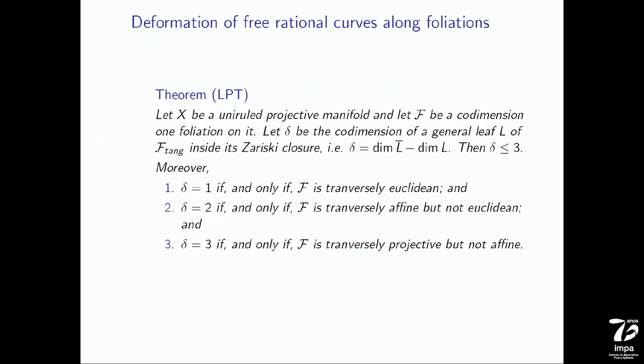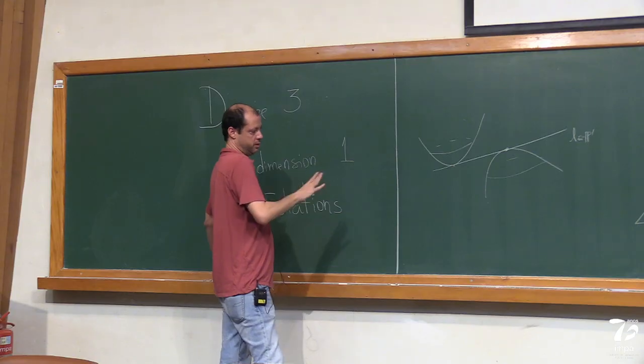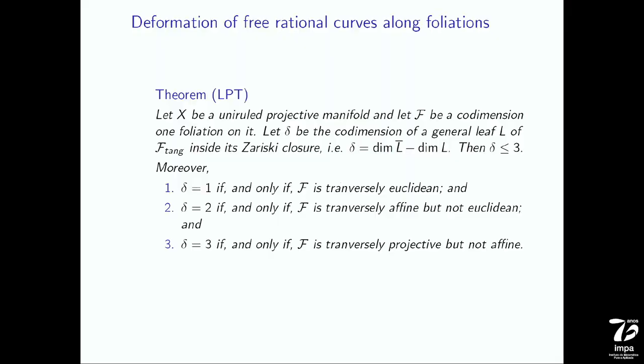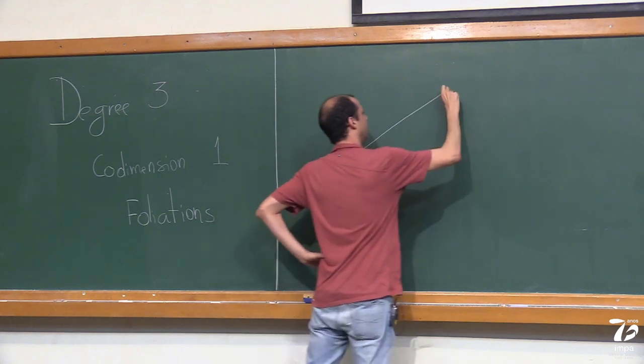What I want to discuss today is not a survey of those results, but rather how we can draw a similar — though not complete — classification, also based on some extrinsic geometry. It took me a long time to realize that I should not be looking at the restriction of the foliation to hyperplanes, but instead should understand how the foliation intersects lines. The basic idea is the following.